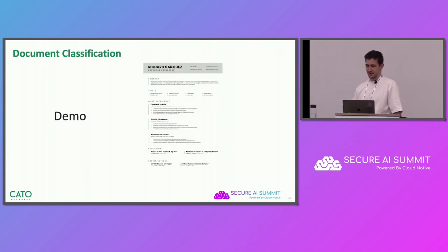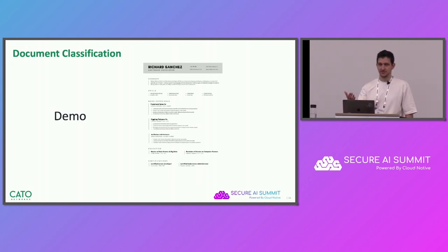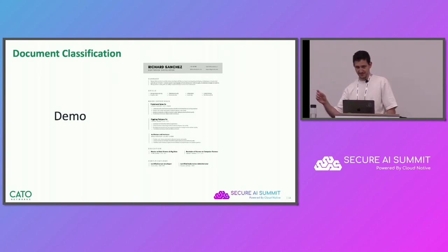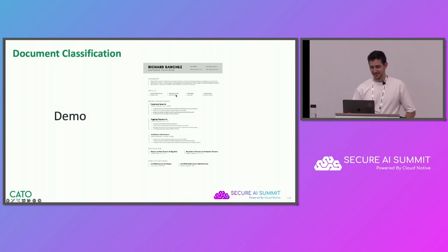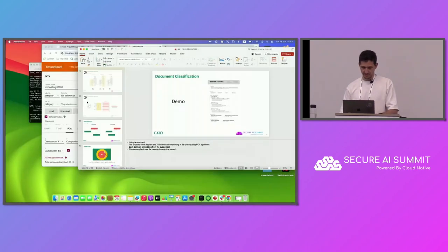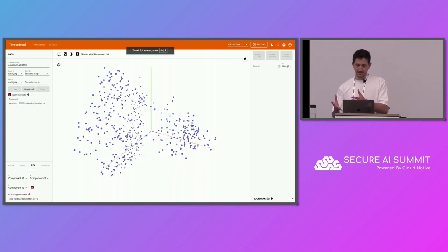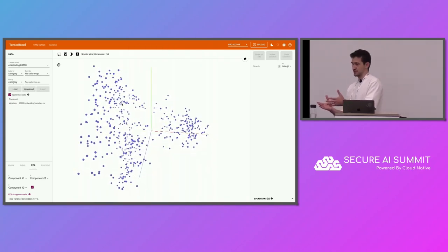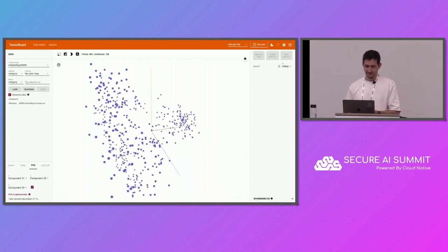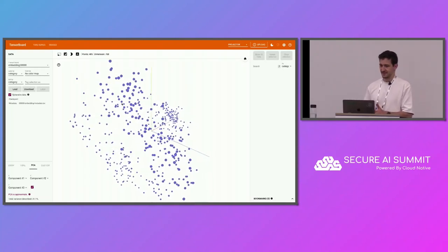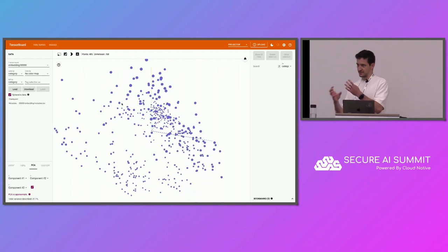Hopefully that was clear enough. We have a short demo using TensorBoard to show how we can classify a new document using a support set. We're going to classify this CV file of Richard Sanchez — not the crazy scientist from Rick and Morty, just a made-up resume of a software engineer with no real PII. Let's switch over to TensorBoard. If you're not familiar with it, it's a great tool to view embeddings. Right here we have the embeddings of our support set — 485 points or documents in three dimensions, which we created embeddings for.